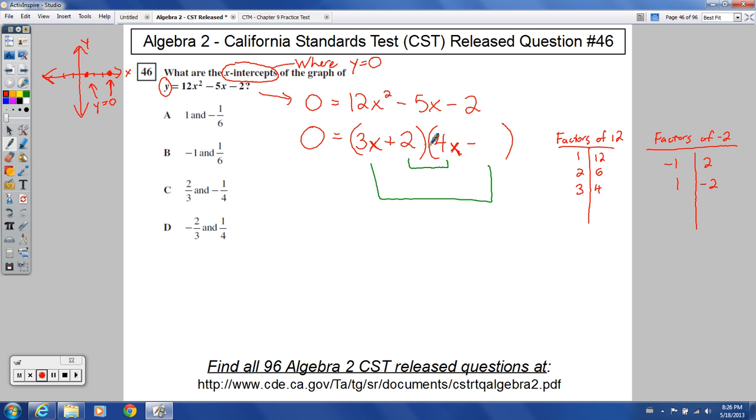So we just had a 1 and a negative 2 there. Let's flip-flop those around, and let's try a positive 2 now here, and a negative 1 here. Let's see what that gives me. So it looks like this would give me, on the outside, negative 3x, and this would give me positive 8x. So I put those together, I get positive 5x, but I wanted negative 5x.